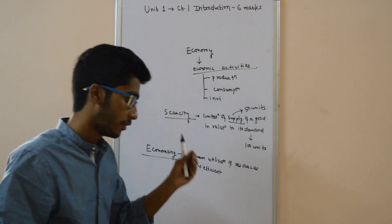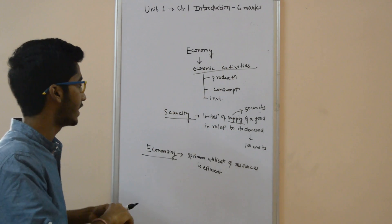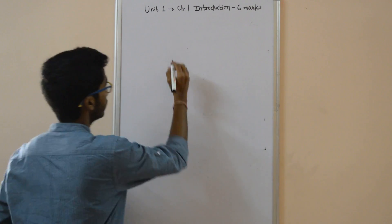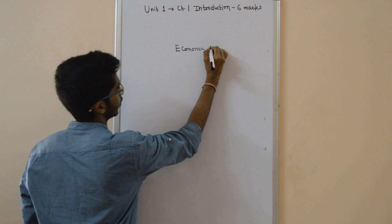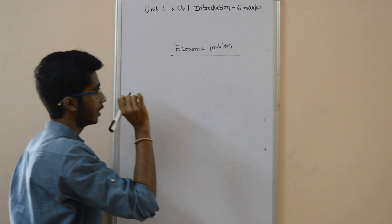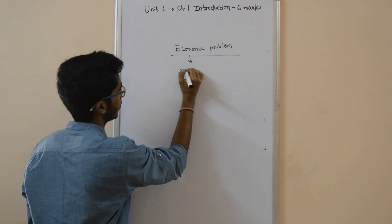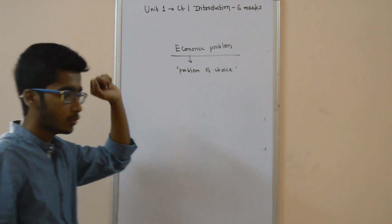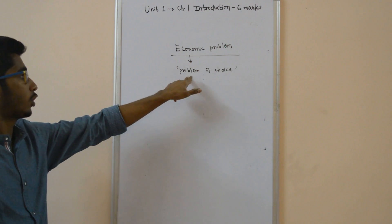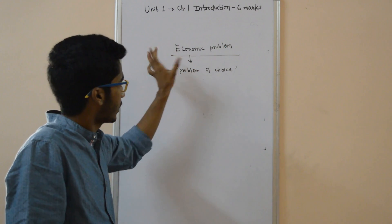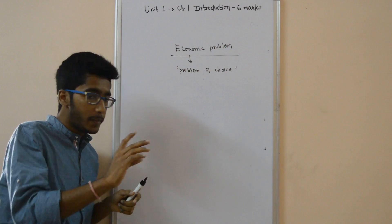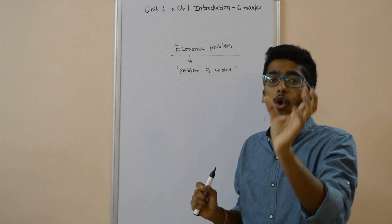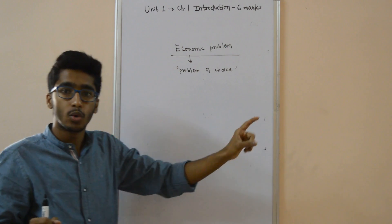The next topic is called the economic problem. Economic problem means problem of choice. Economic problem is also called the problem of choice. By the problem of choice, we mean the problem of allocation of limited or scarce resources towards alternative uses.